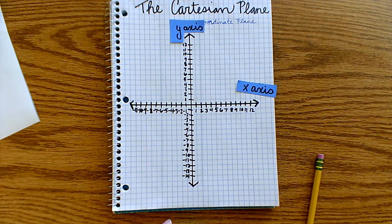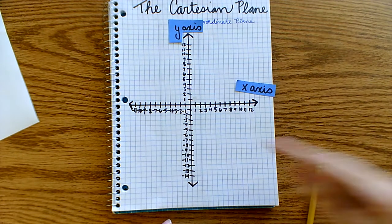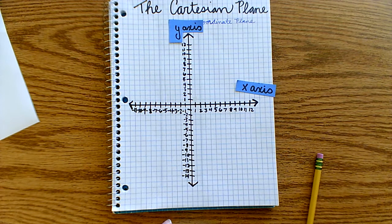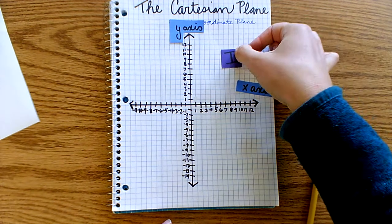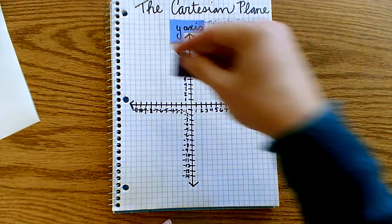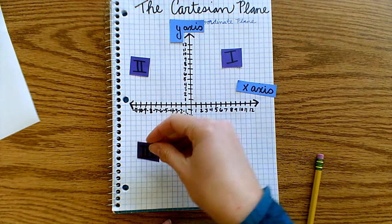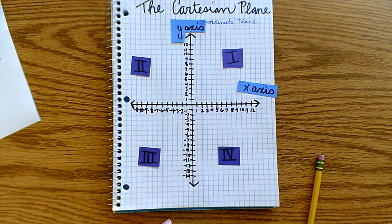Anyways, the coordinate plane, as you see, creates four different quadrants. And they all have a special name. We label them with Roman numerals. So quadrant one, I'm sorry, quadrant two, quadrant three, quadrant four.